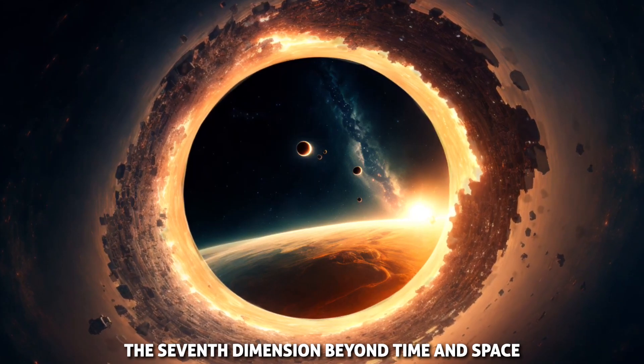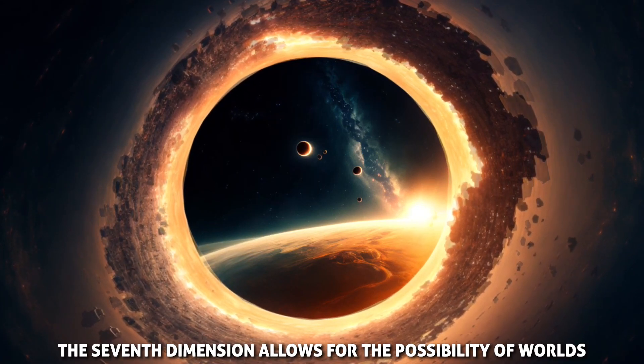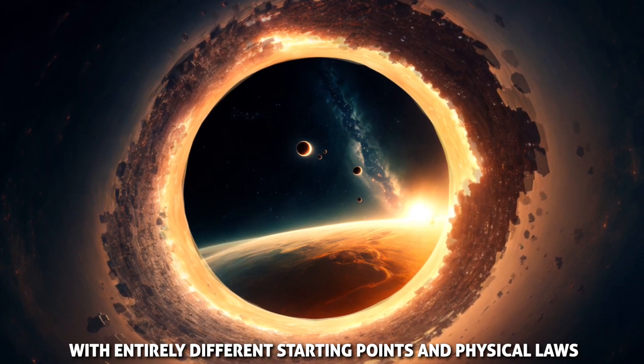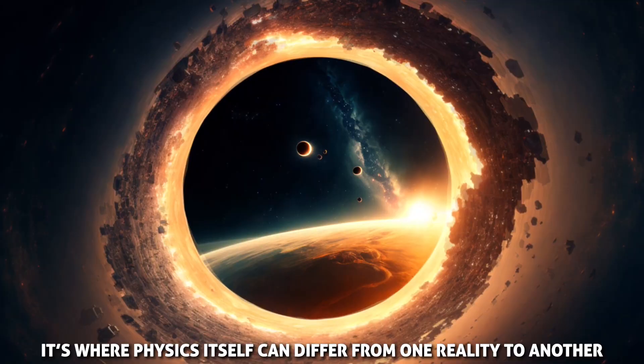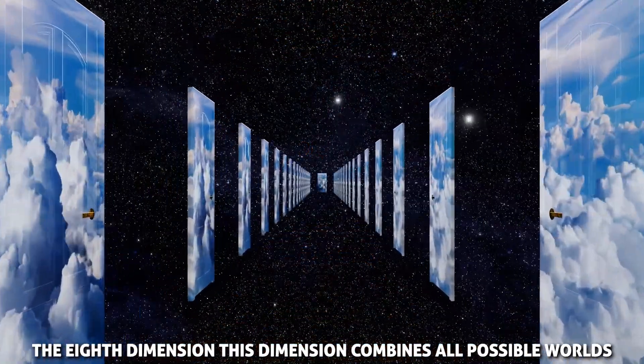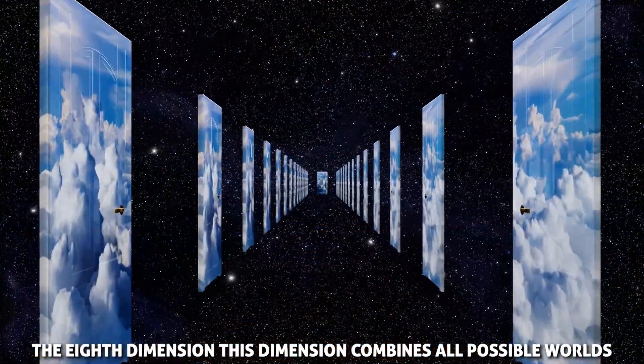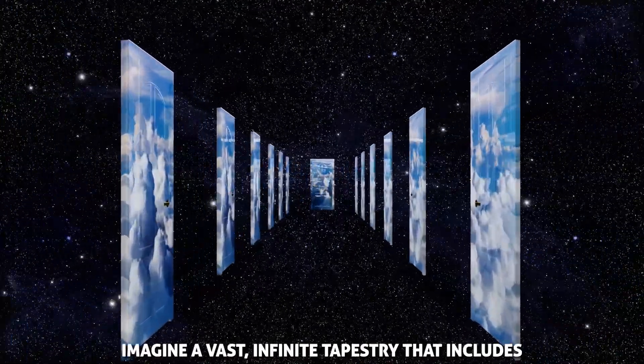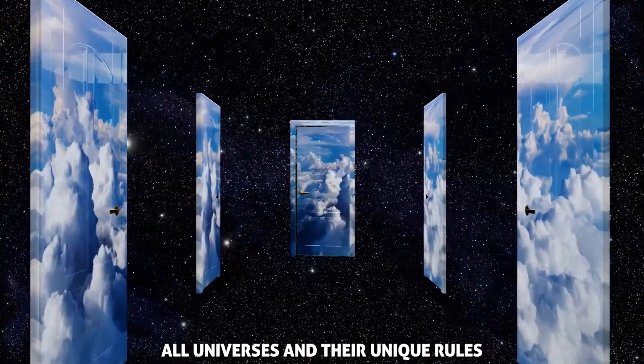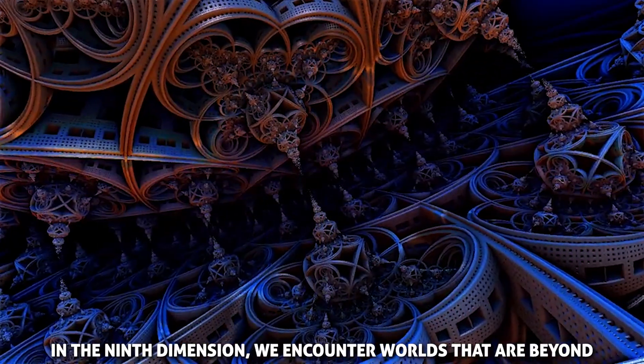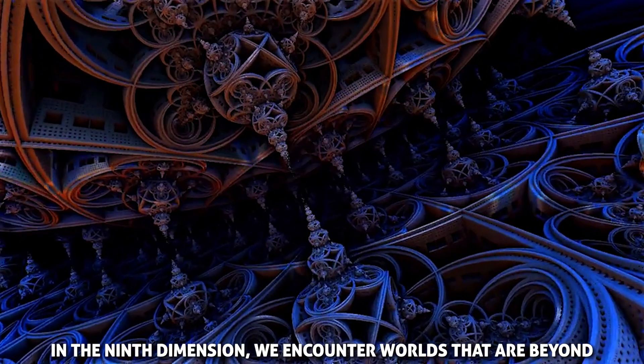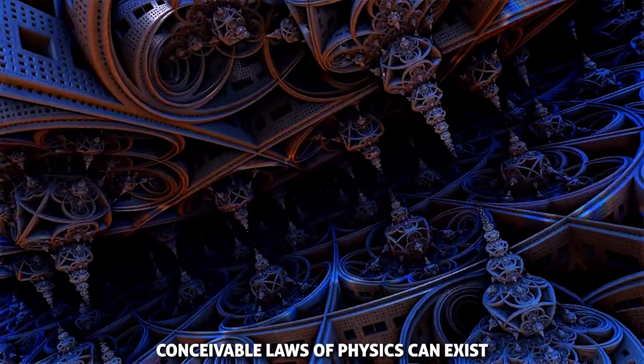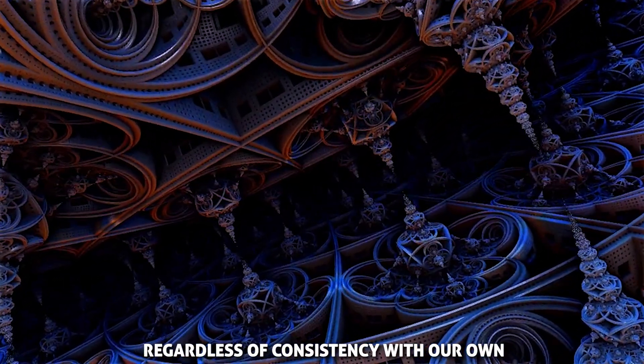The seventh dimension. Beyond time and space, the seventh dimension allows for the possibility of worlds with entirely different starting points and physical laws. It's where physics itself can differ from one reality to another. The eighth dimension. This dimension combines all possible worlds with different laws of physics, connecting them into a single framework. Imagine a vast, infinite tapestry that includes all universes and their unique rules. In the ninth dimension, we encounter worlds that are beyond our comprehension, where every possible universe with any conceivable laws of physics can exist, regardless of consistency with our own.